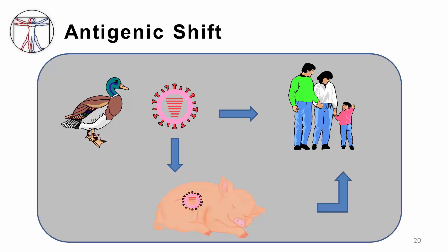There is evidence that birds, particularly waterfowl such as ducks, are a common source of these new strains of influenza. Birds may pass their virus directly to humans, or may first pass the virus to an intermediate host, such as swine, who then passes it along to humans.